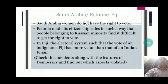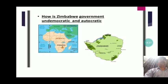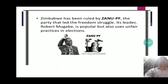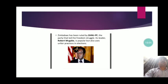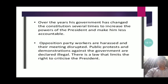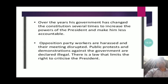The next country is Zimbabwe, an African country. Zimbabwe was under the control of ZANU-PF, the political party that led the freedom struggle, and its leader was Robert Mugabe, who was very popular. However, he thereafter used many unfair means to win elections. Over the years, his government changed the constitution several times — more than eight to ten times — to increase the power of the president and make him less accountable.